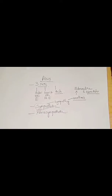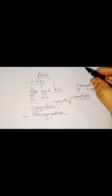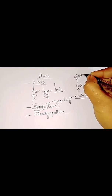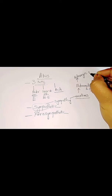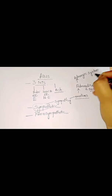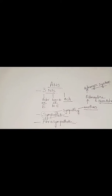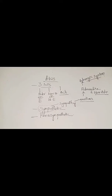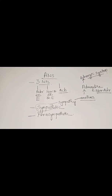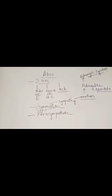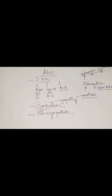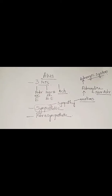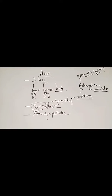Hence, another synonym for the sympathetic system is the adrenergic system. The sympathetic system involves emotions, and the cause of emotions is adrenaline. So due to the presence of the neurotransmitter adrenaline, the sympathetic system is also known as the adrenergic system. It is so simple to remember.